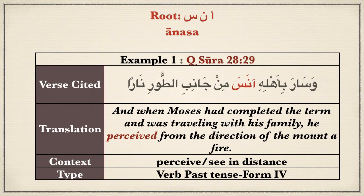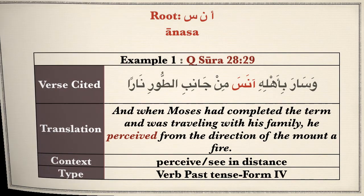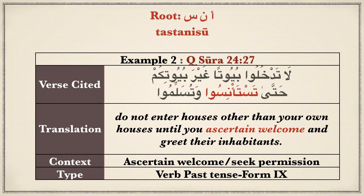The next word, anasa, is from the root alif, nun, and seen. The past tense form 1 verb is anisa, to mean become familiar or friendly. The Quran does not use this form 1, but uses form 4 of this verb, anasa, to mean perceive or see something from a distance. We are all familiar with the verse where Moses perceived or saw a fire from a distance. Continuing the same root, the form 10 verb is pronounced as is-ta'naasa, to mean to be sociable or get on familiar terms. From that meaning, the Quran uses it in the context of not entering houses until you ascertain your welcome, or you have asked permission to enter, or you drew attention to your presence.